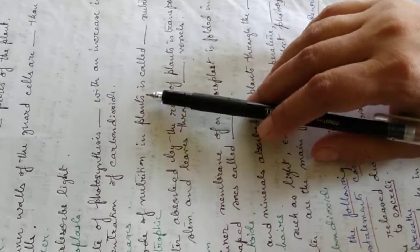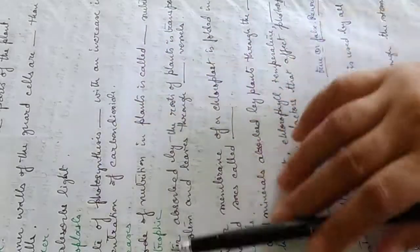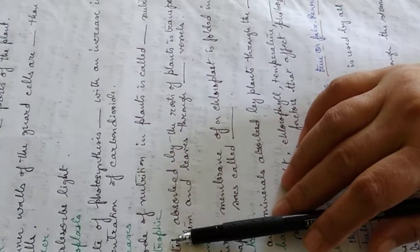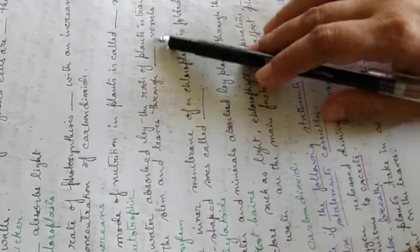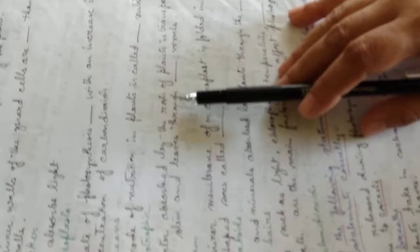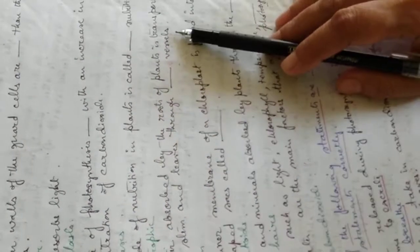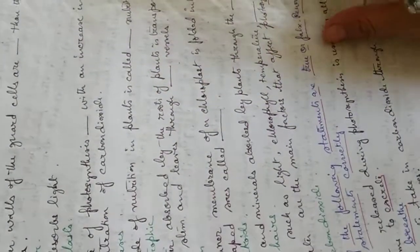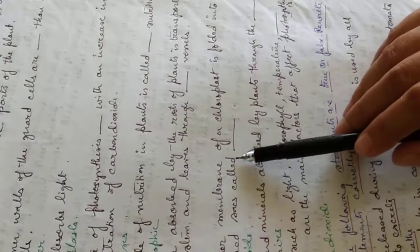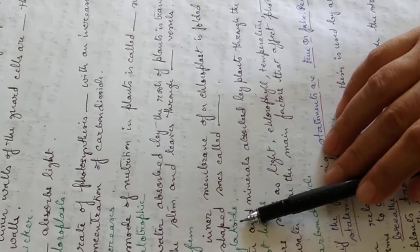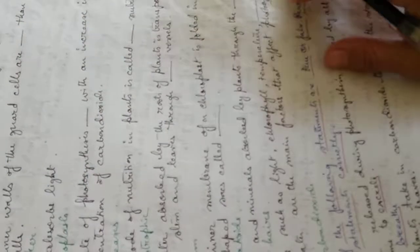The mode of nutrition in plants is called dash nutrition. It is autotrophic nutrition. The water absorbed by the roots of the plant is transported up to the stem and leaves through the dash vessels, the xylem vessels. The inner membrane of a chloroplast is folded into disc-shaped sacs called dash. They are known as thylakoids.